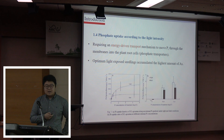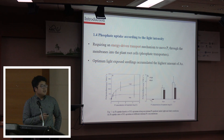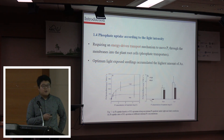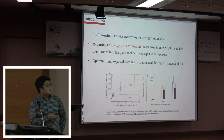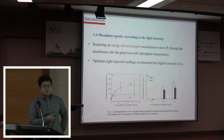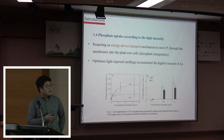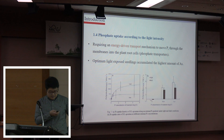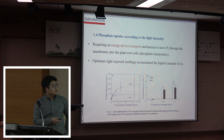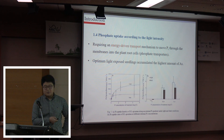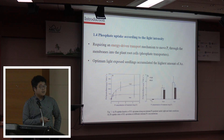ATP can be produced through photosynthesis. High light intensity can help photosynthesis and increase the uptake of phosphate. As I explained, it can also increase the factor for arsenic accumulation in plants.